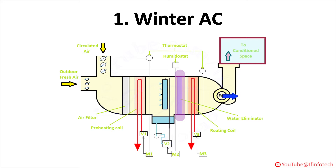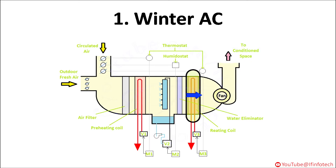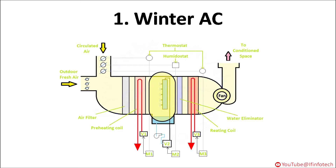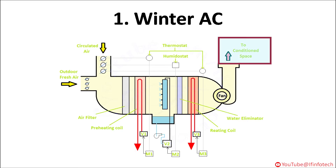Before passing air to the conditioned space, it is reheated to adjust temperature and humidity. The preheating coil and reheating coil are provided with valve V1 and valve V3 that open or close by motor M1 and motor M3 respectively. The quantity of air passing through the air conditioning system depends upon the load, so the quantity of air supply is controlled with the help of dampers.